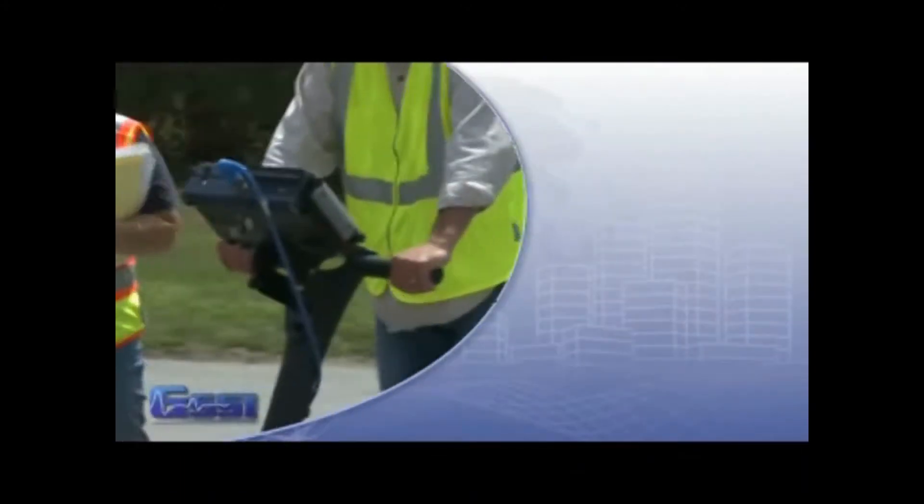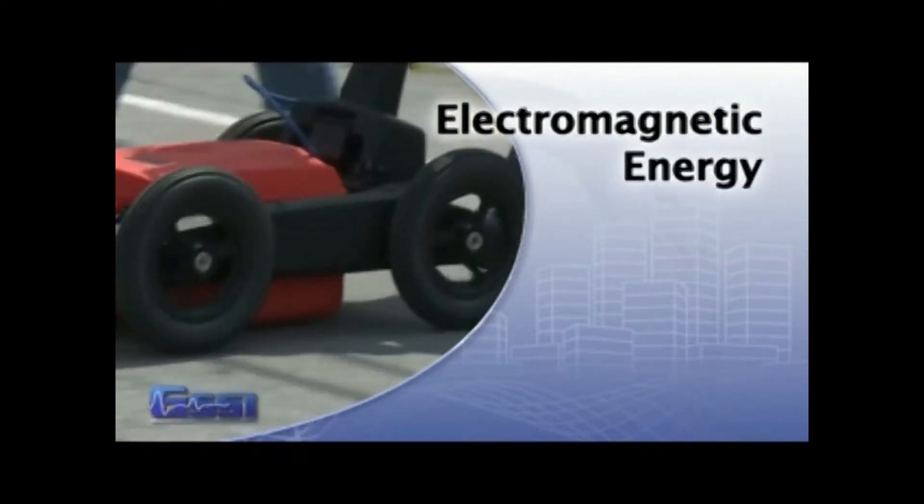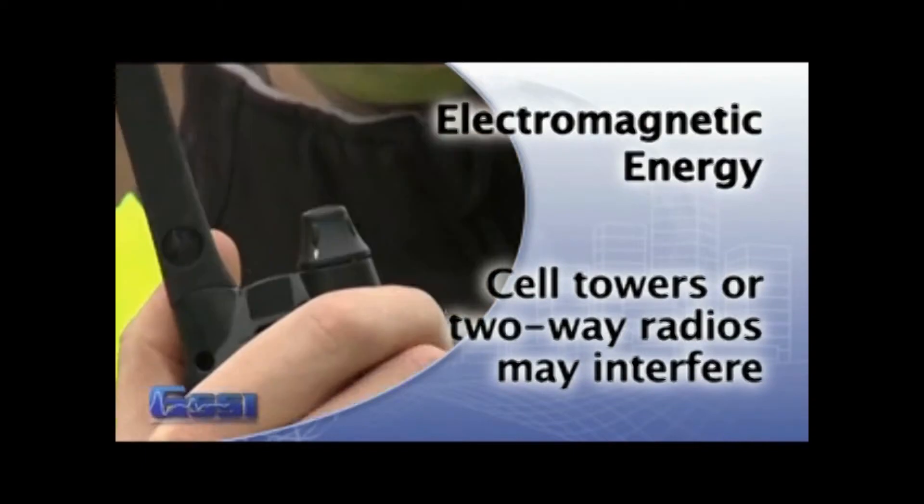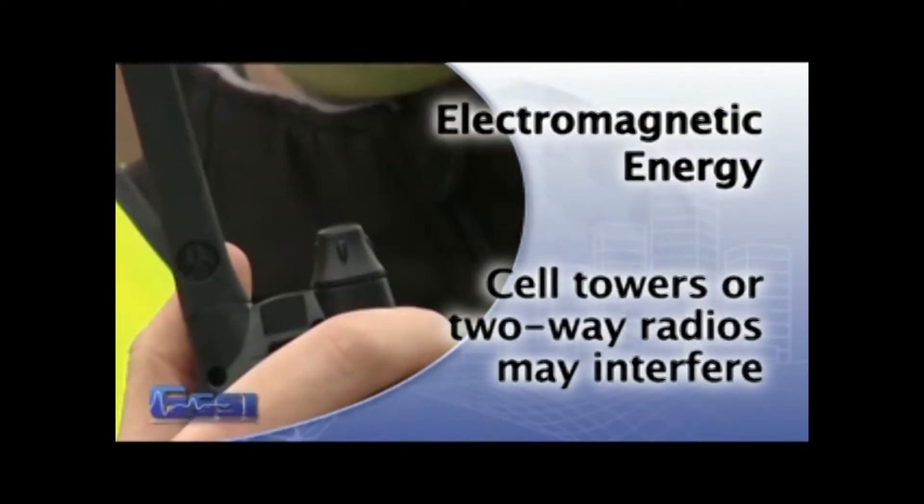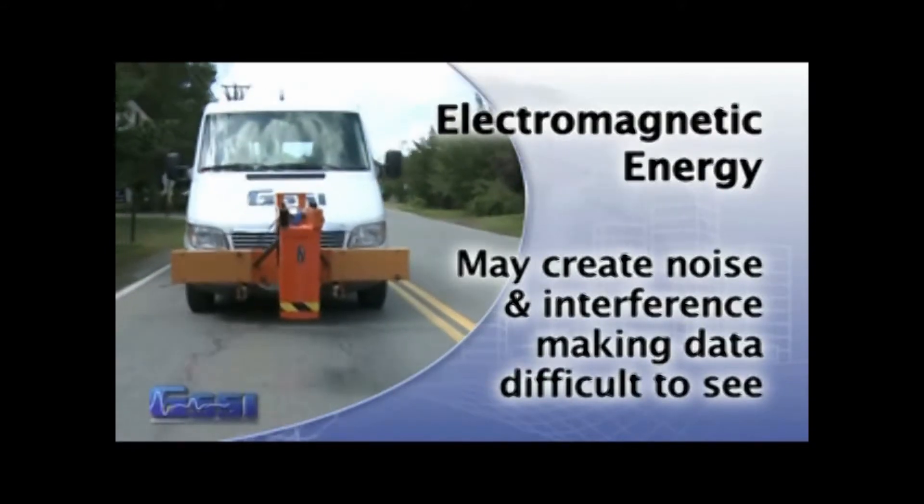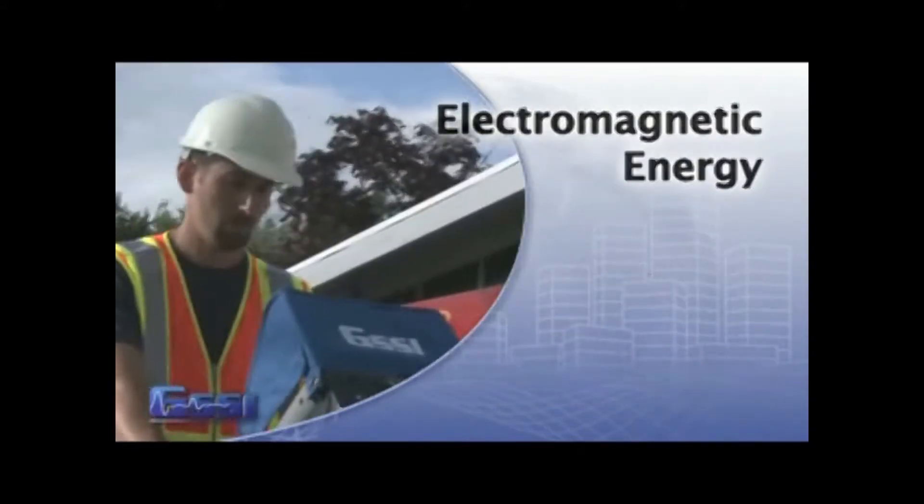Lastly, remember that GPR is electromagnetic energy. Other sources of electromagnetic energy, such as cell phone towers and two-way radios, may interfere. This will not cause any damage, but may make it more difficult to see deeply into concrete or soil.